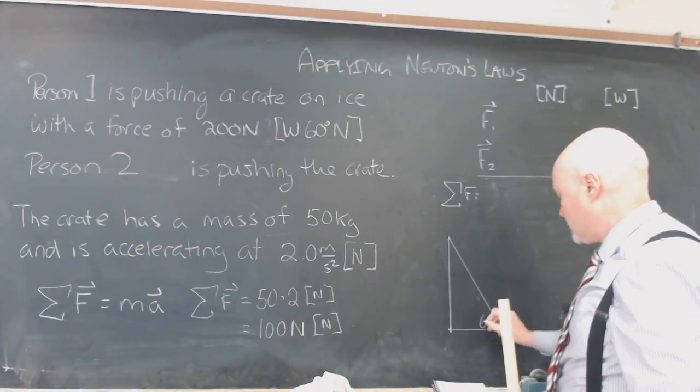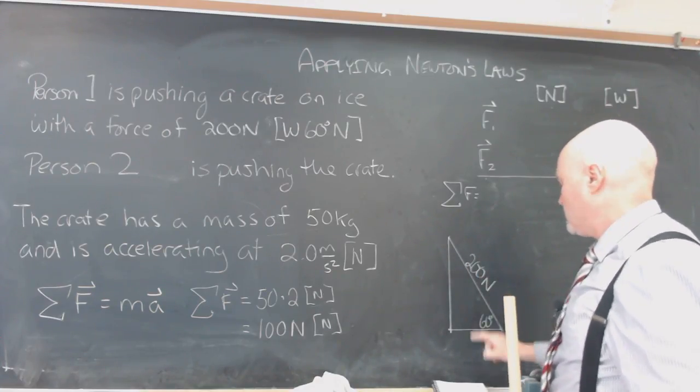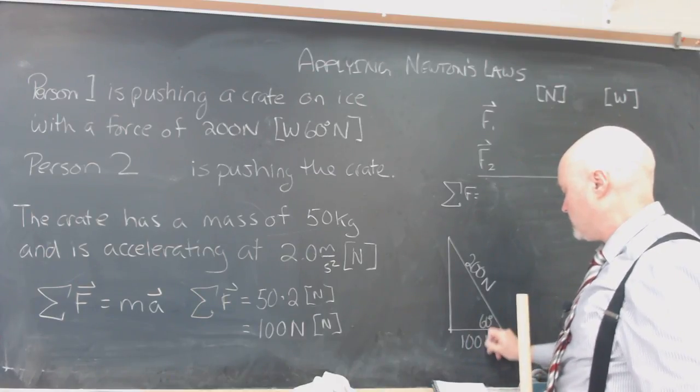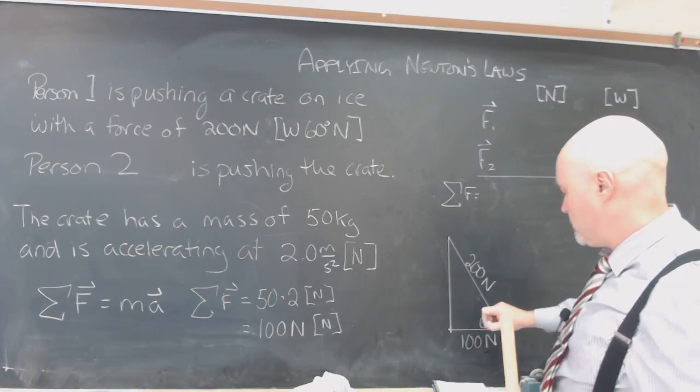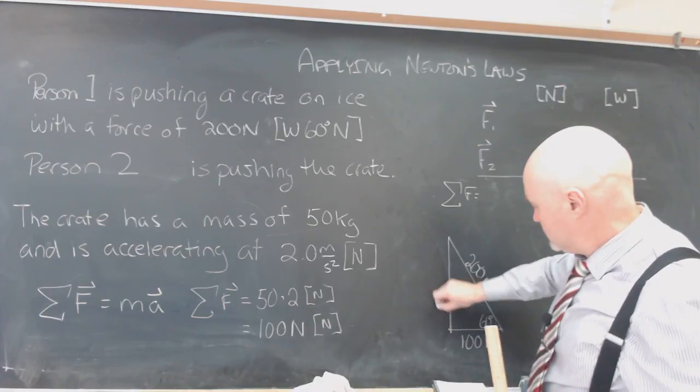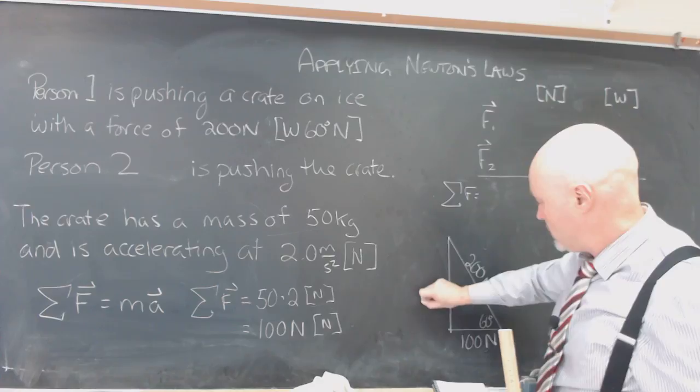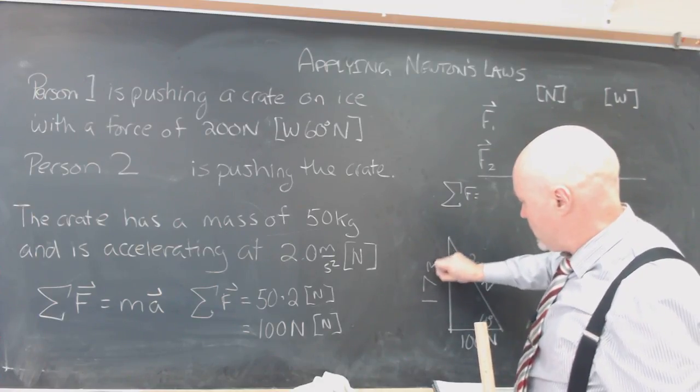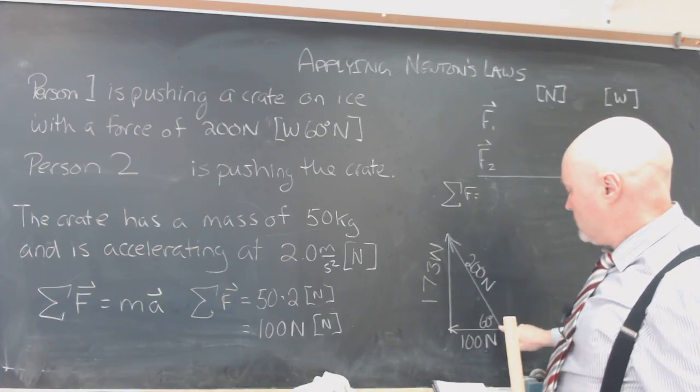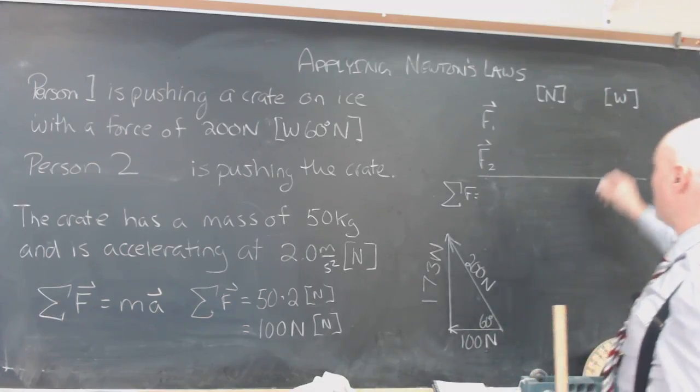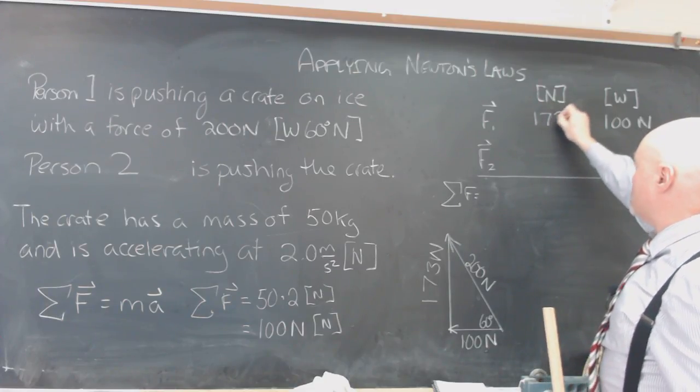And so this is a 60 degree angle. Well, this is 200 Newtons here on my hypotenuse. So I happen to notice that I love this 30-60-90 triangle because the cosine here is 100 Newtons. And the sine is going to be 0.8660 times 100 times 2, so it's going to be 173 Newtons. And so my westerly component is 100 Newtons. My northerly component is 173 Newtons.